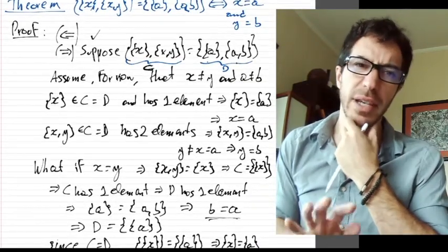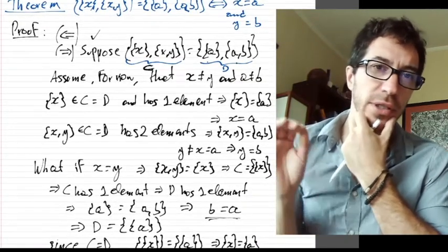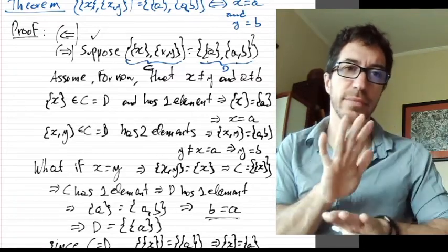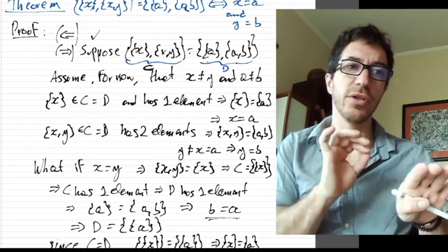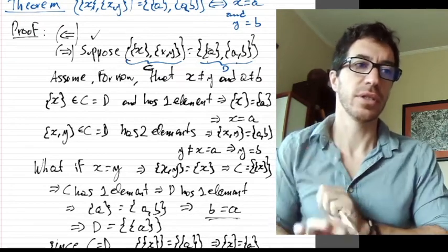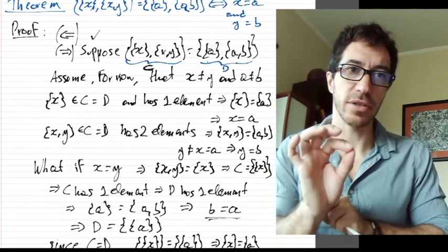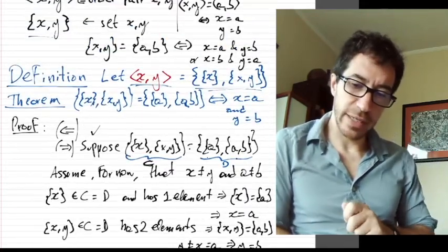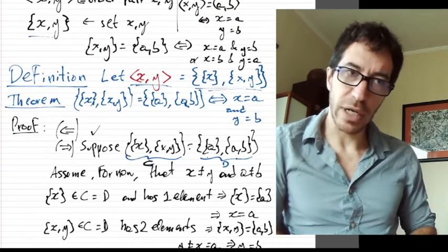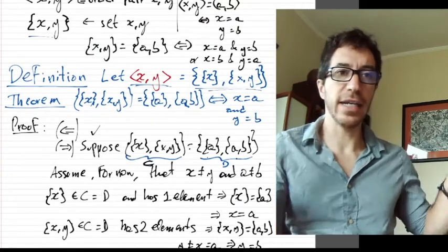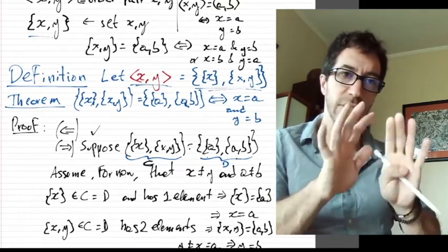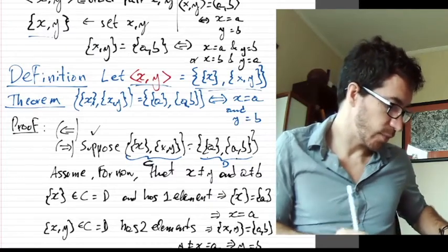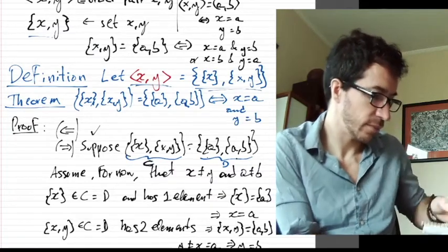I went kind of quickly through that — it's a very simple argument. Pause the video, go through the argument step by step, and see if you can make sense of each step formally. Good. We have a pair that behaves the way we want without having to define a new constructor. We just use the set constructor and from sets we define what we want. Now that we have pairs, we can define the Cartesian product.